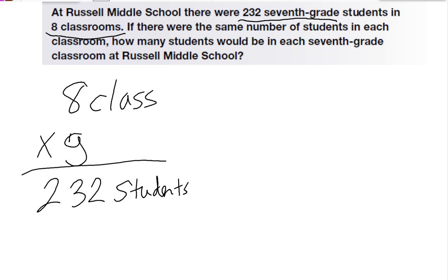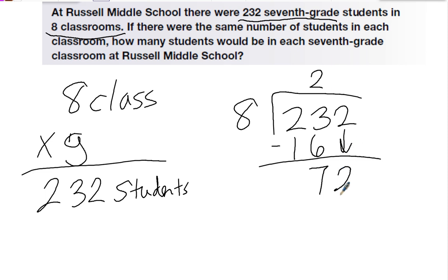To find the answer, I'm going to take 232 and divide it by 8. 8 goes into 23 two times. 8 times 2 is 16. 23 minus 16 is 7. Bring down the 2. 8 goes into 72 nine times. This tells me that there are 29 students in each classroom.